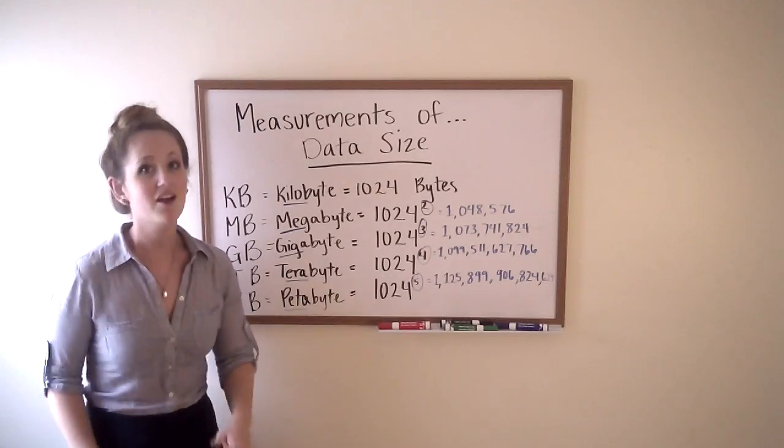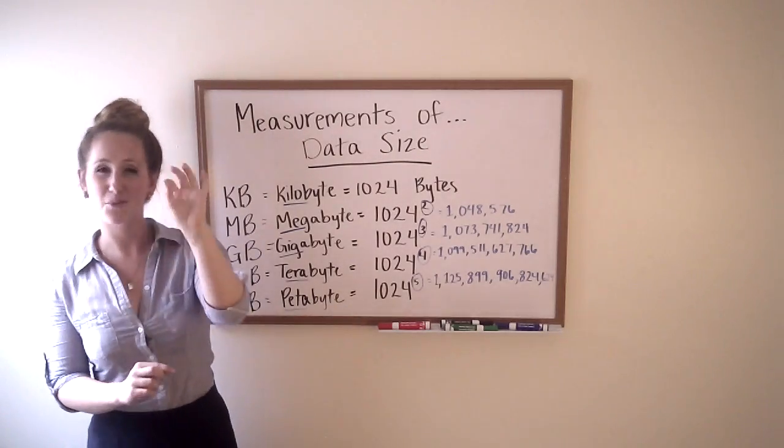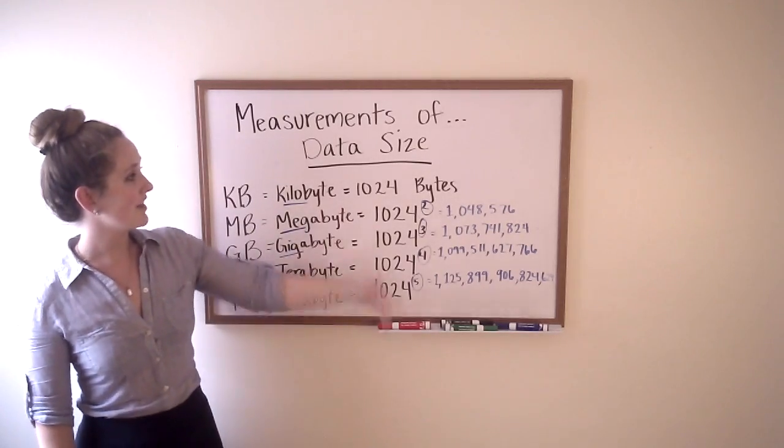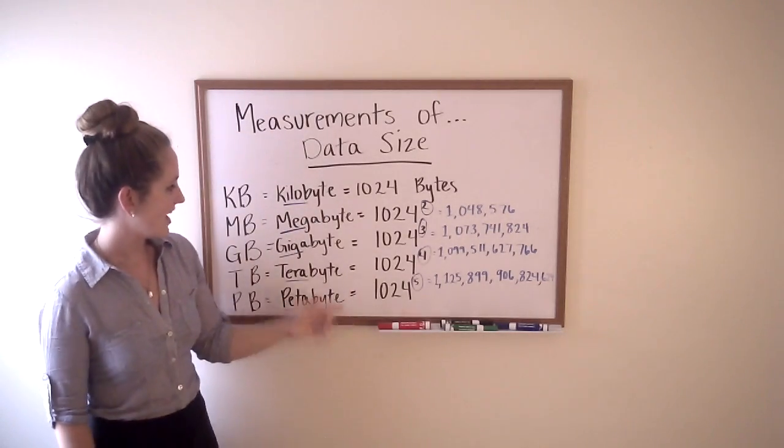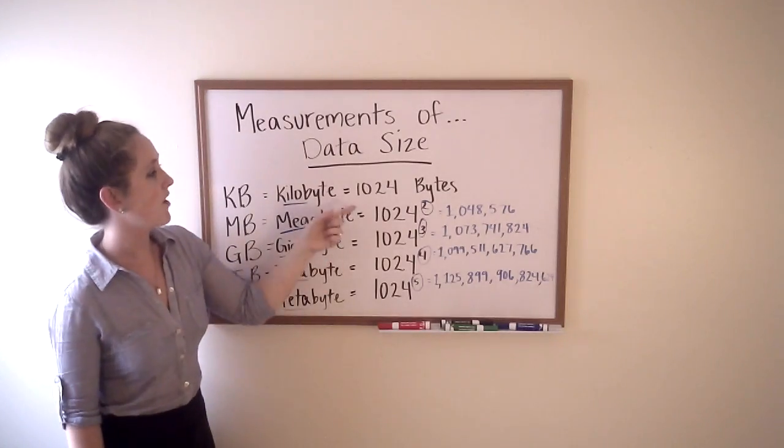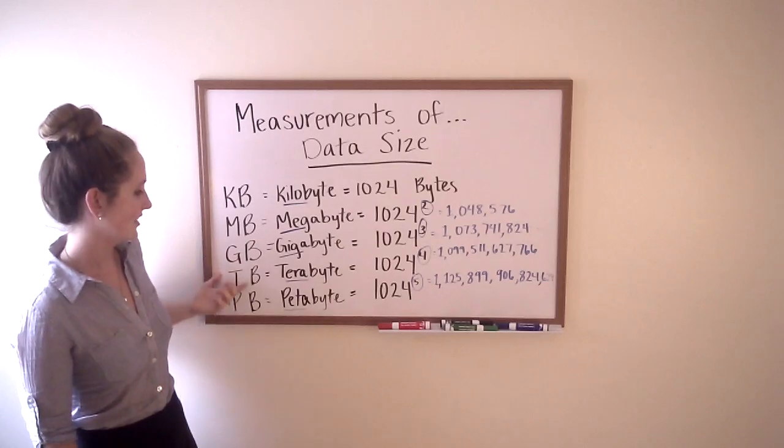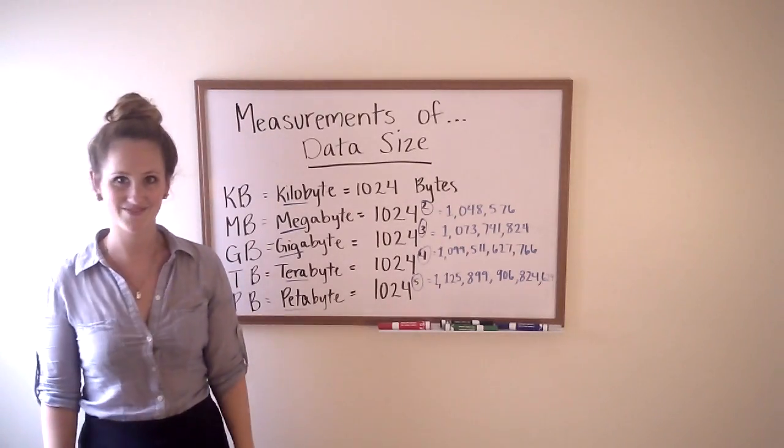Just a quick review: bit, tiny little, either one or zero; byte, eight bits; kilobyte, 1024 bytes. After that, everything is an exponent of 1024, going from kilobyte to megabyte to gigabyte to terabyte, all the way up to petabyte. We'll see you in the next video. Bye.